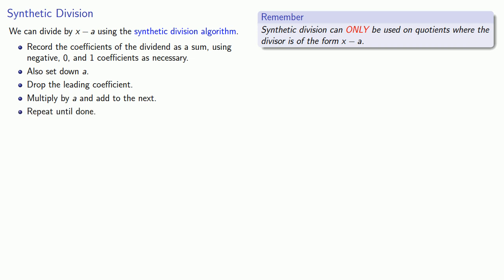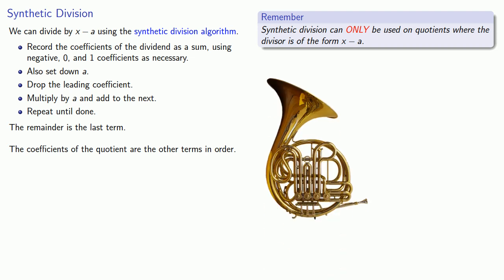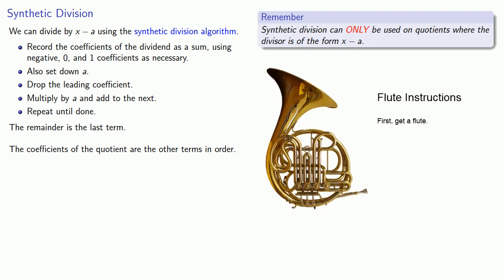At this point, we'll read off the quotient. The remainder is the last term. And the coefficients of the quotient are the other terms in order. Again, until you actually do synthetic division, this makes about as much sense as instructions for playing the flute. So let's do some synthetic divisions.